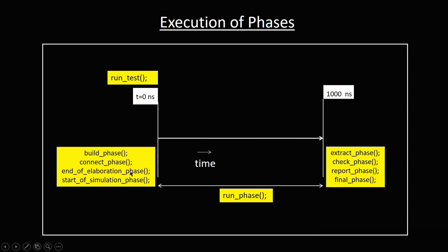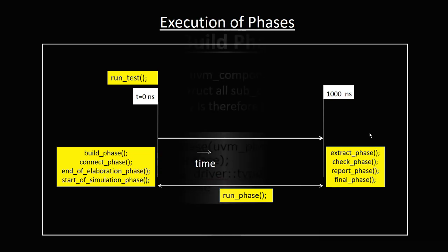Build phase, connect phase, end of elaboration, and start of simulation — these four phases are pre-run phases. They are function-oriented, meaning there is no time consumed. Run phase is task-based, which means it does consume time. Extract, check, report, and final are post-run phases, and like pre-run phases, they are also function-oriented.